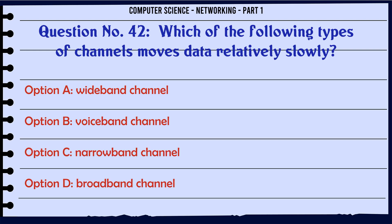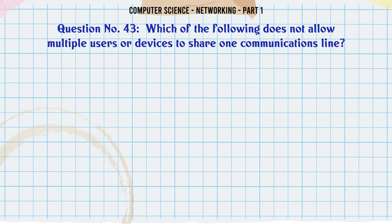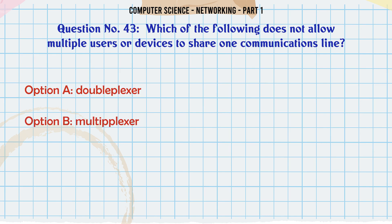Which of the following types of channels moves data relatively slowly? A. Wideband channel. B. Voiceband channel. C. Narrowband channel. D. Broadband channel. The correct answer is: Narrowband channel.